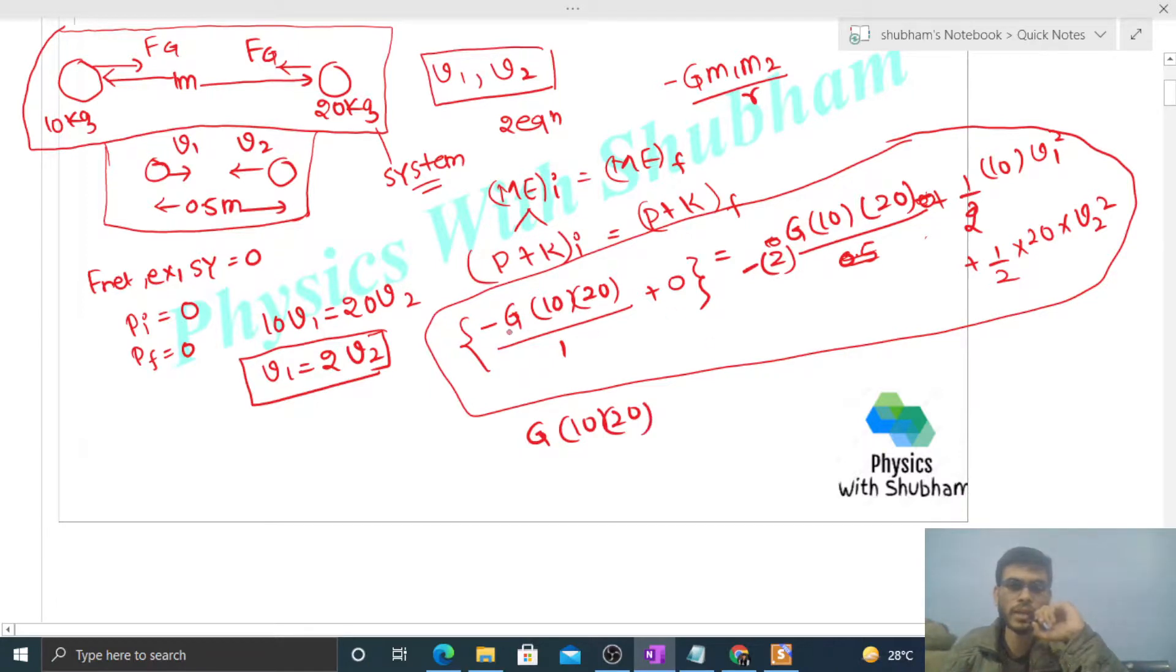That is equal to half, and 10 taken out, so it will be V1 squared plus twice of V2 squared. So this is how much? This is 5, and this is 2, so this is 40G.